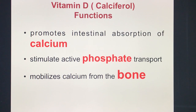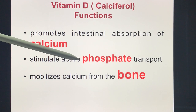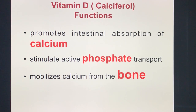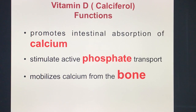The functions of Vitamin D, or calciferol, relate to calcium, phosphate, and bone. In detail: Vitamin D promotes intestinal absorption of calcium, stimulates the active transport of phosphate, and most importantly, mobilizes calcium from the bone.